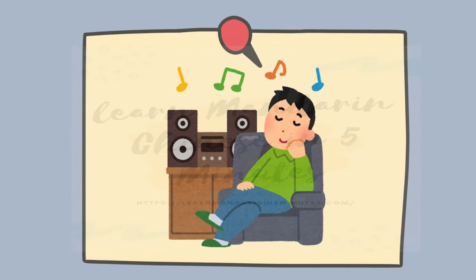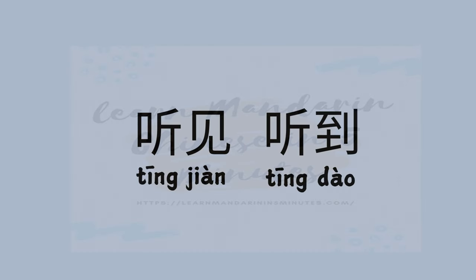Ting is often combined with other words to create specific listening-related phrases, and this is where things get a little tricky. It's like looking at the same scene through different lenses — each one slightly shifts how you view it. Now let us compare two similar sounding words, Ting Jian and Ting Dao.